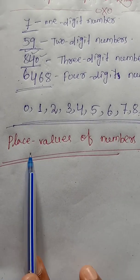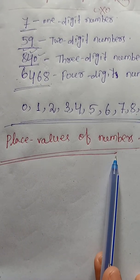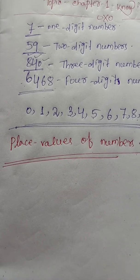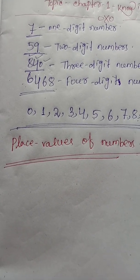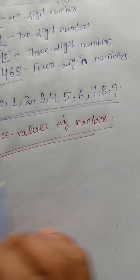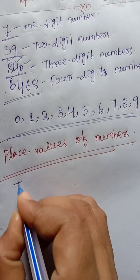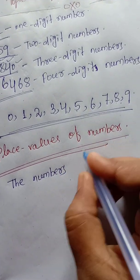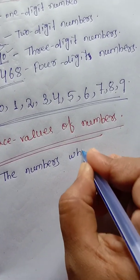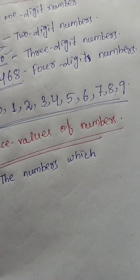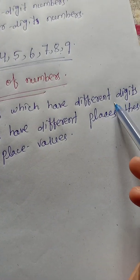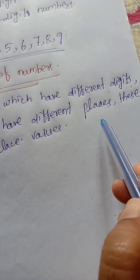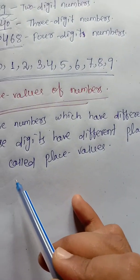Let us see place values of numbers. In mathematics, numbers have some places and those places have names. These are called place values. The numbers which have different digits — these digits have different places. These are called place values.